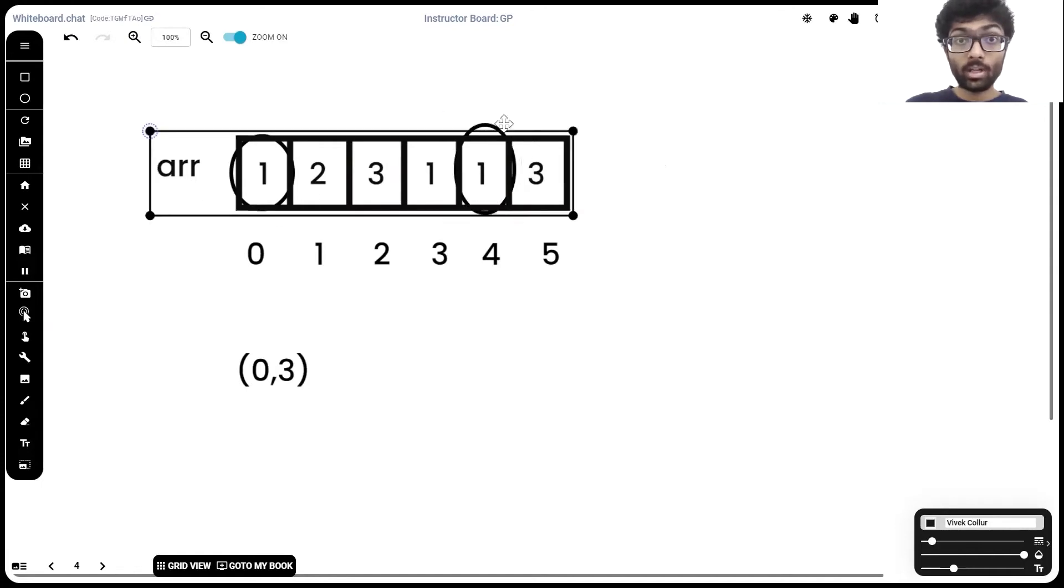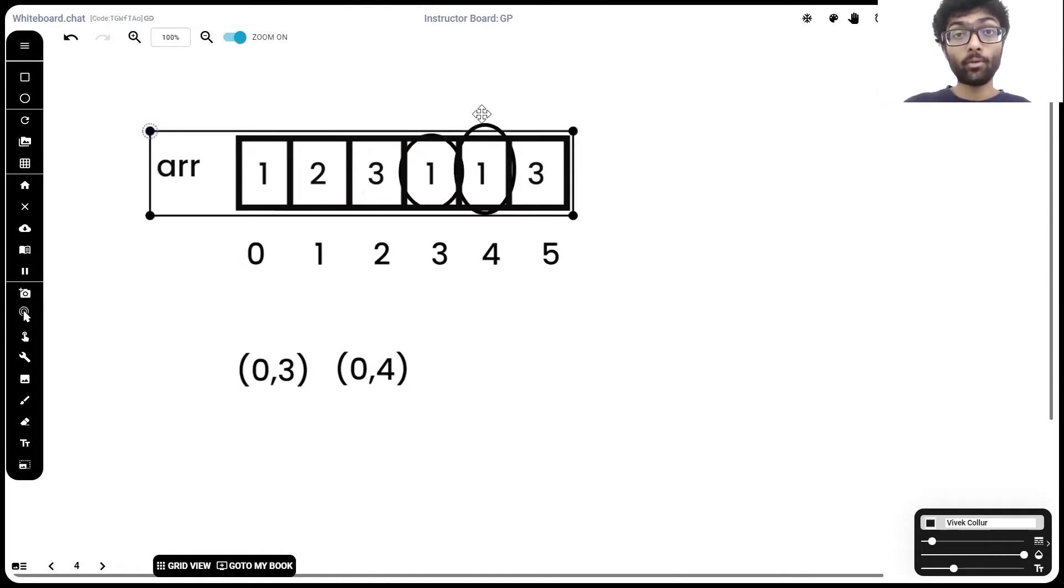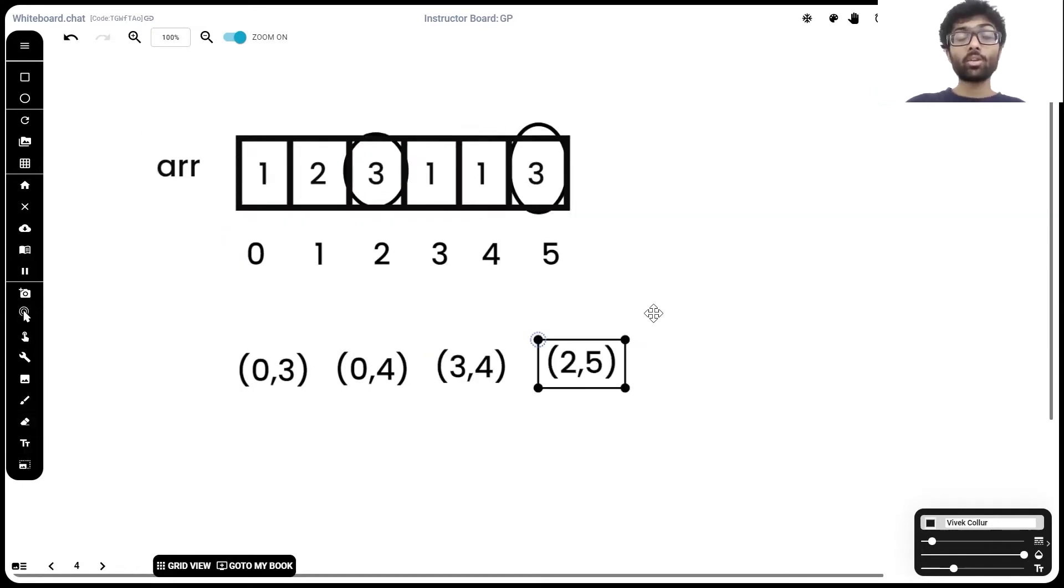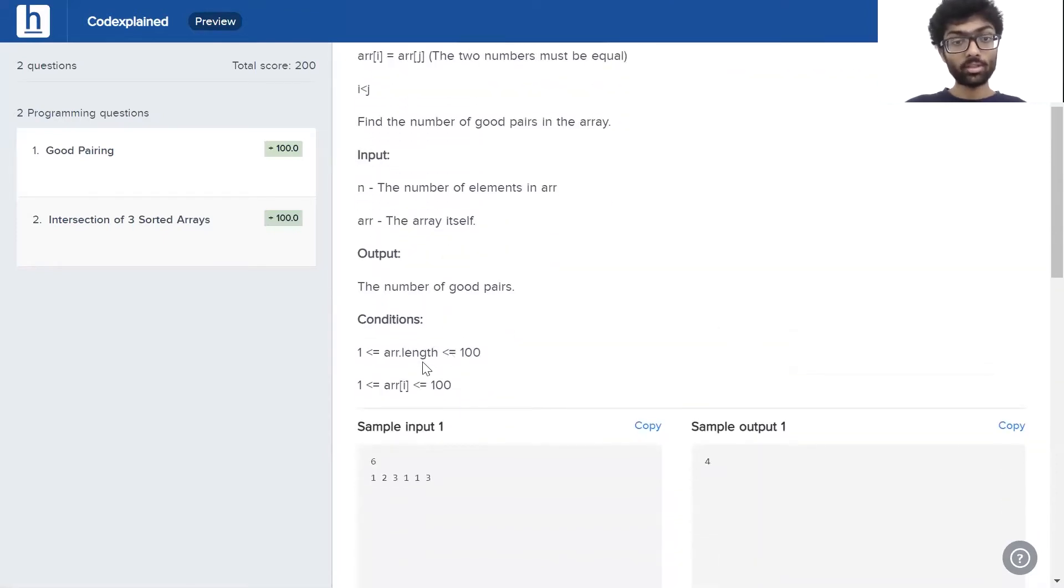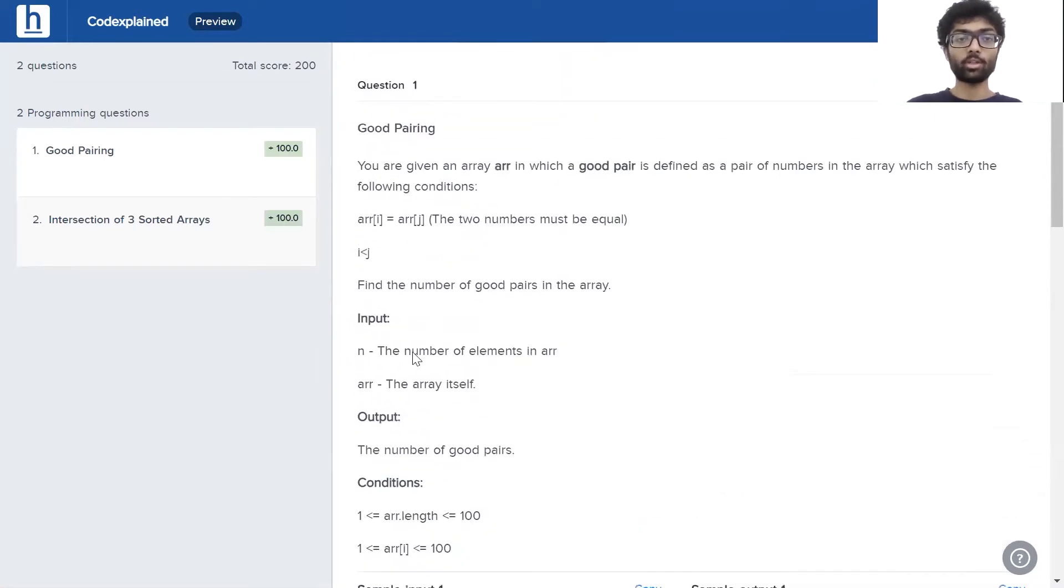Similarly, these two elements form a good pair, that is zero and four. Now we can see three and four form a good pair as well along with two and five. So clearly here we can see four good pairs which is why our output is four. Now let's have a look at the conditions. The length of the array ranges between one and hundred and each element in the array can be between one and hundred. So nothing too special right here.